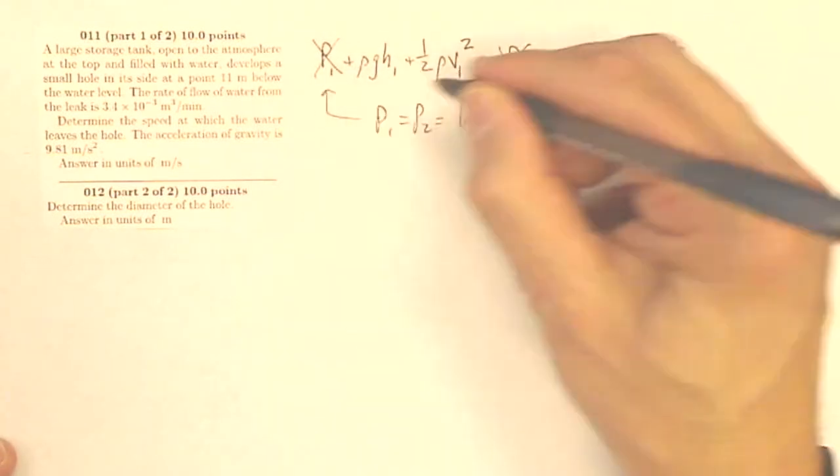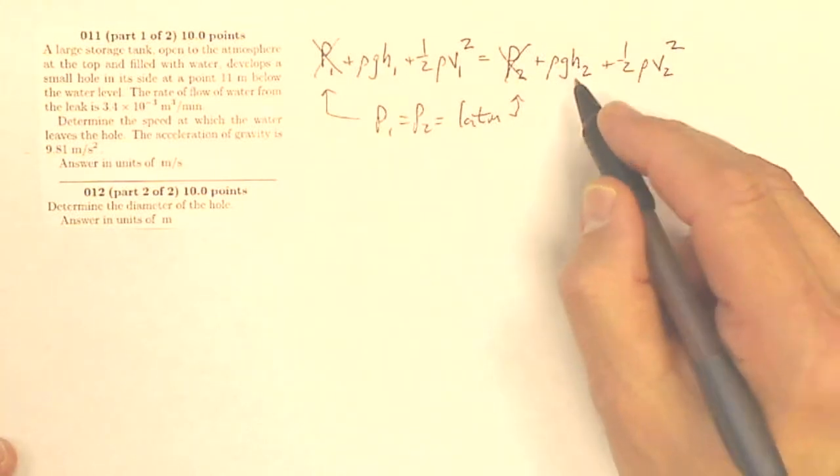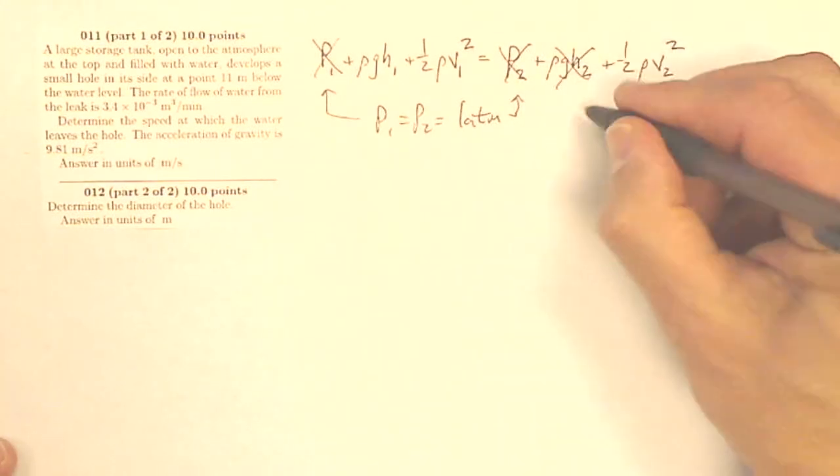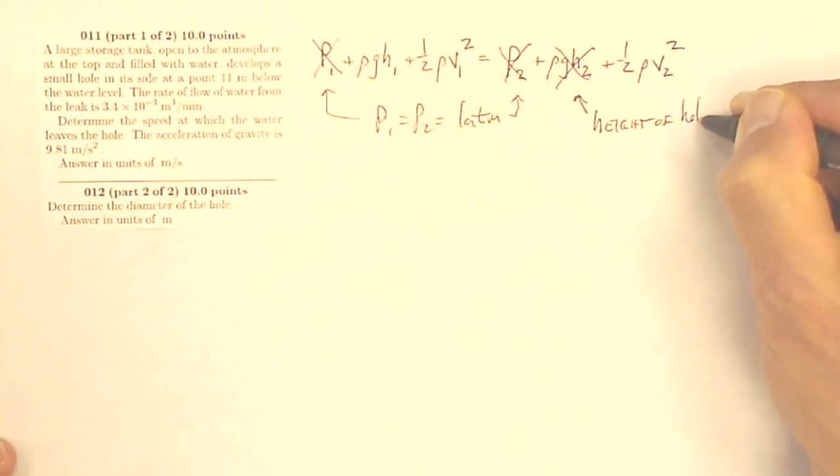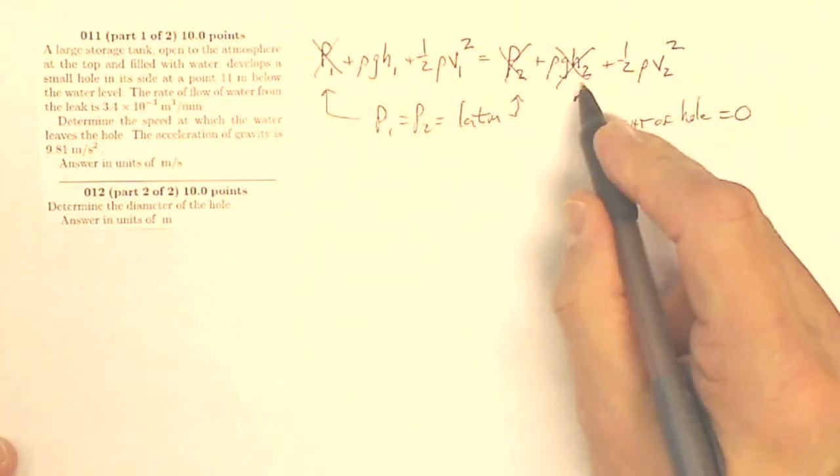I know that the height of the bottom is going to be zero. Okay, so I'll just call that the height of the hole is zero. So that will go away.